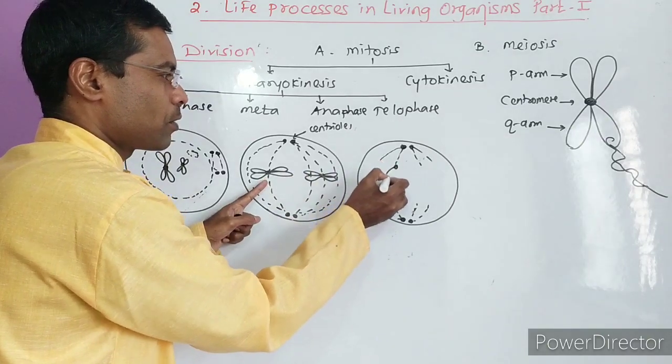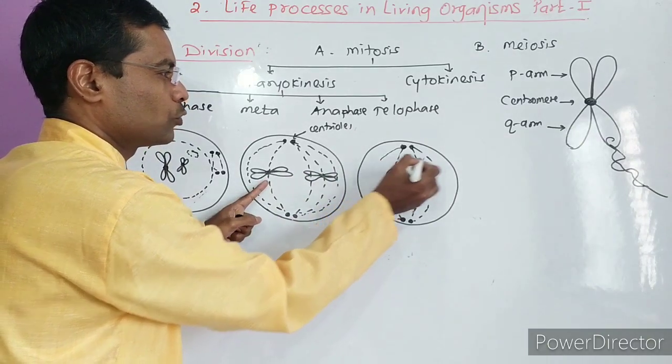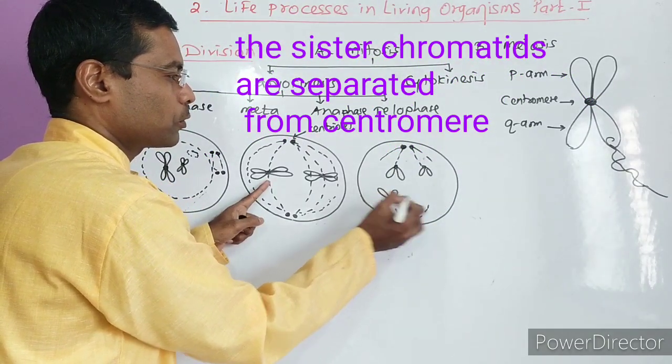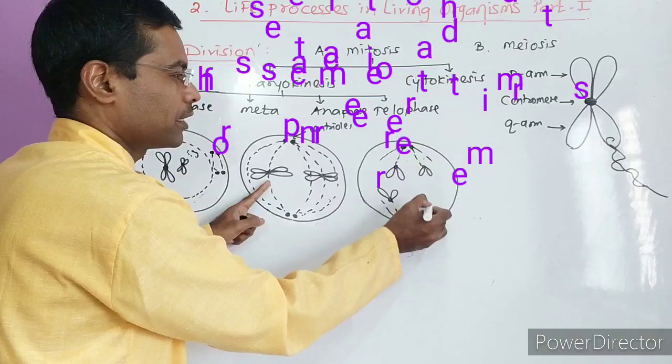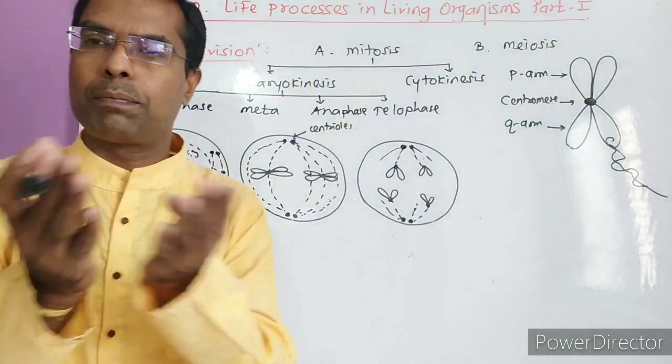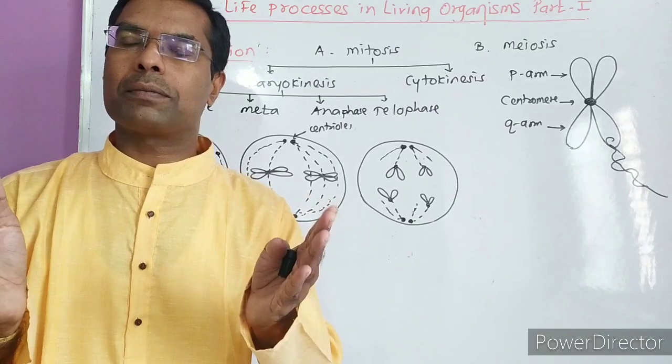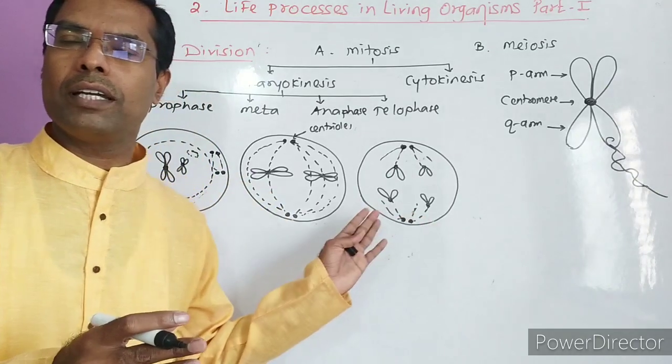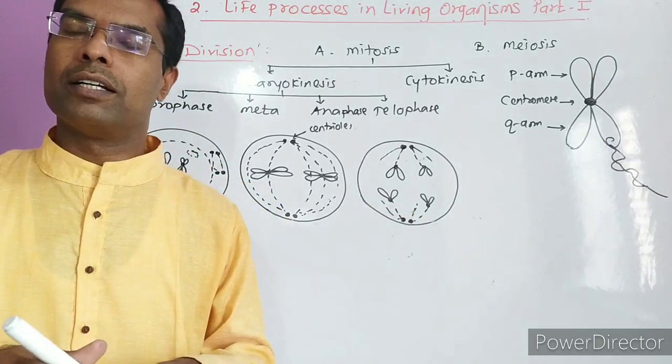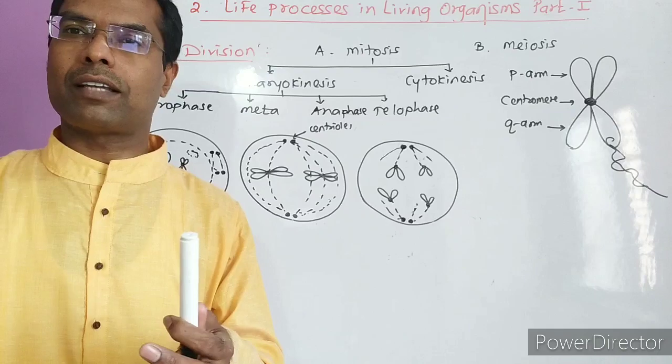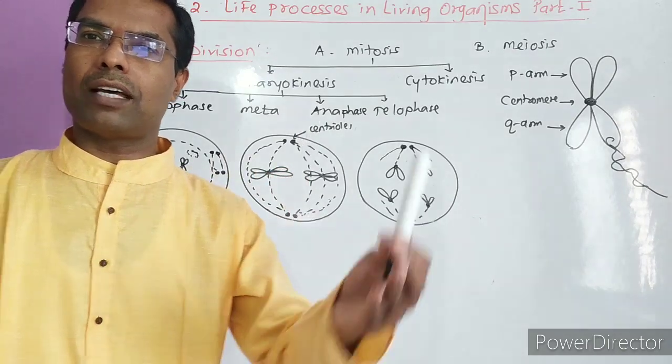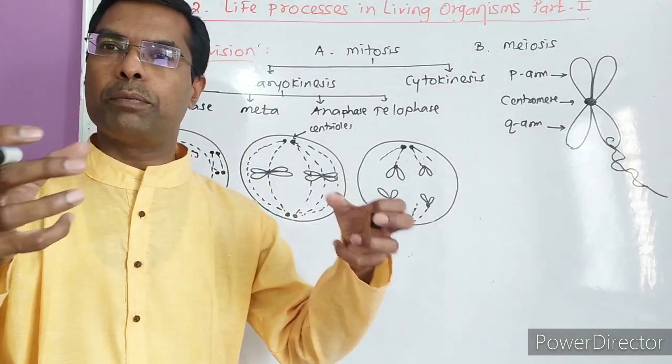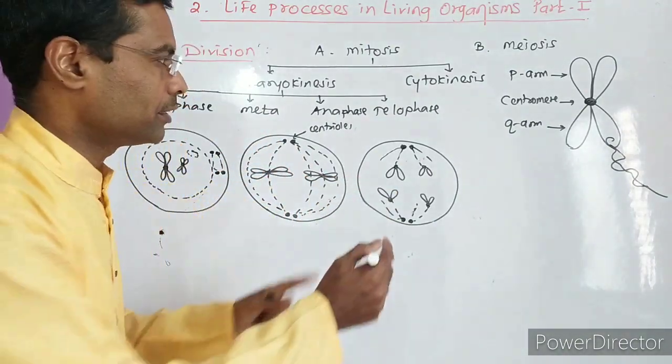See here, these are the spindle fibers. And the chromosome - see, this chromosome is now separating. Here is another chromosome. The sister chromatids are separated. In this way, the centromere splits and the sister chromatids from their pair are separated. This is called anaphase. It looks like a bunch of bananas because many chromosomes are separating. Half the genetic material goes to one side, half to the other. The spindle fibers are pulled towards the centriole.